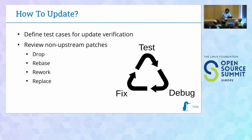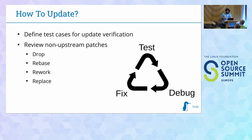In isolation, how would you update a downstream component? You start by defining test cases to verify your update didn't break dependencies. Then you look at the patches separating you from the version you forked from. Some patches you can drop because you upstreamed them. Some are rebased — you rebase the patch, perhaps give it some love, send it upstream so in the next update iteration you can get rid of it. But some you need to rework because the functionality they depended on is gone.